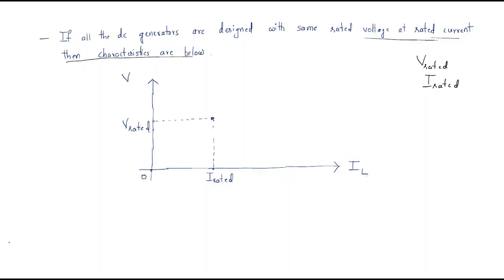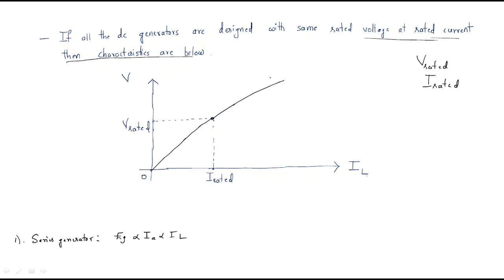First, the series generator. In the series generator, by varying the load current the EMF increases — the armature current and load current increase together. So it will follow a curve, reach that point, and keep increasing. This is the DC series generator.